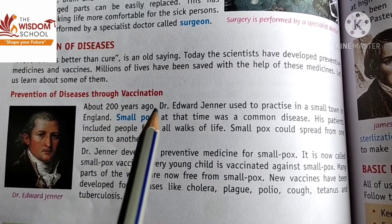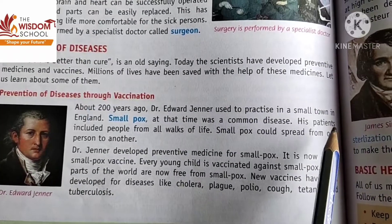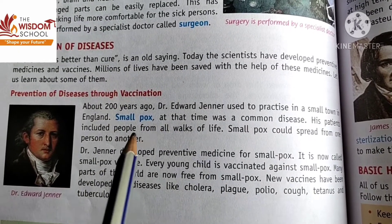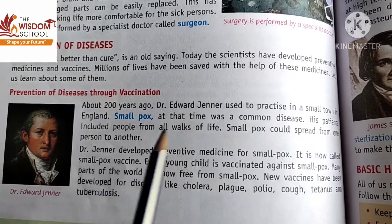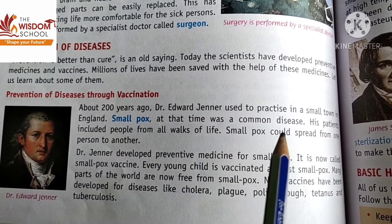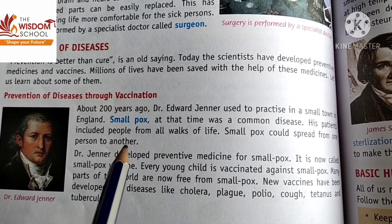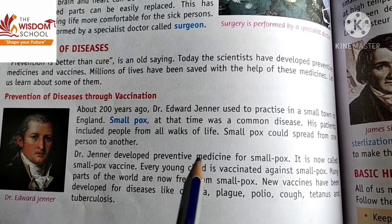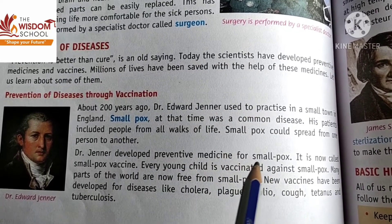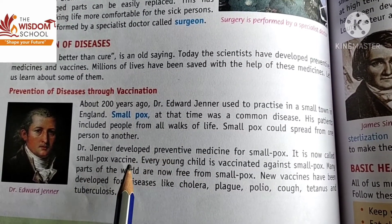About 200 years ago, Dr. Edward Jenner — see this is the picture of Dr. Edward Jenner — practiced in a small town in England. Smallpox at that time was a common disease and could spread from one person to another. Dr. Jenner developed preventive medicine for smallpox, now called the smallpox vaccine.